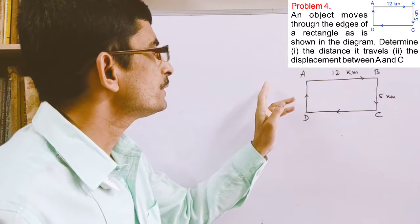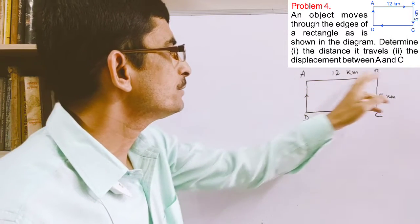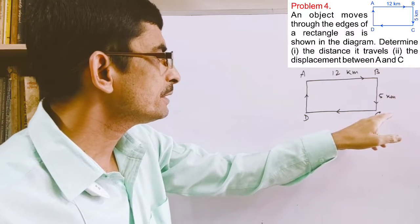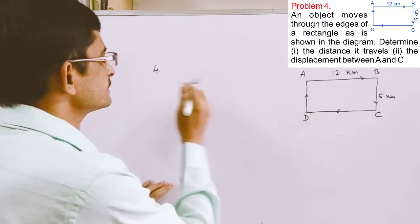One object is moving in a rectangular path. It moves from A to B 12 kilometers, the distance B to C 5 kilometers, C to D, and D to A.